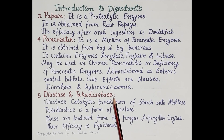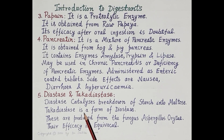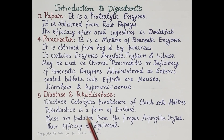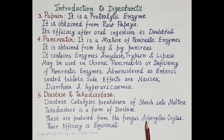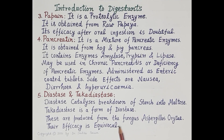The next digestants are diastase and Takadiastase. Diastase catalyzes the breakdown of starch into maltose, and Takadiastase is a form of diastase. These are produced from the fungus Aspergillus oryzae, and their efficacy is equivocal, that is not very clear.